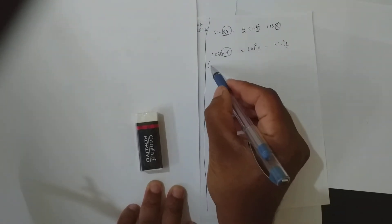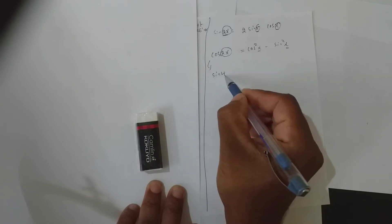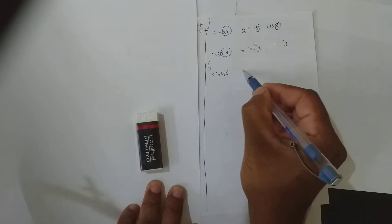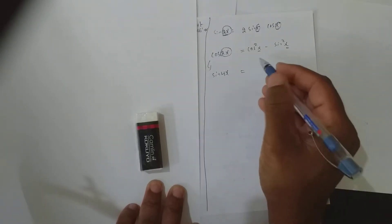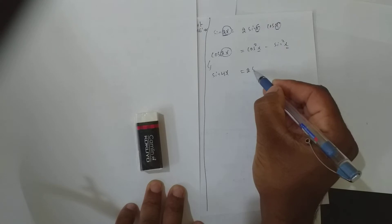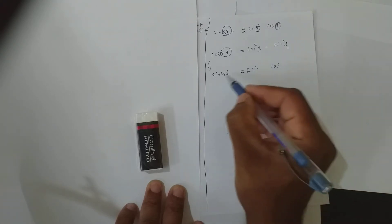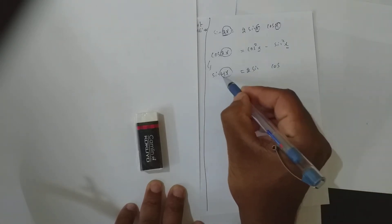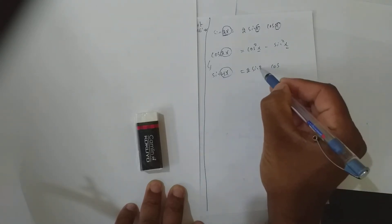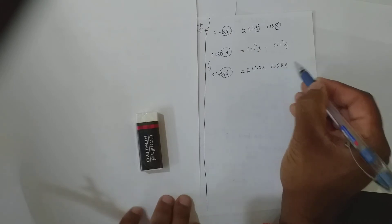Now, if I want to find sin 4x, how much will I get? It is 2 sin cos — half of this angle. So it is 2 sin 2x cos 2x.